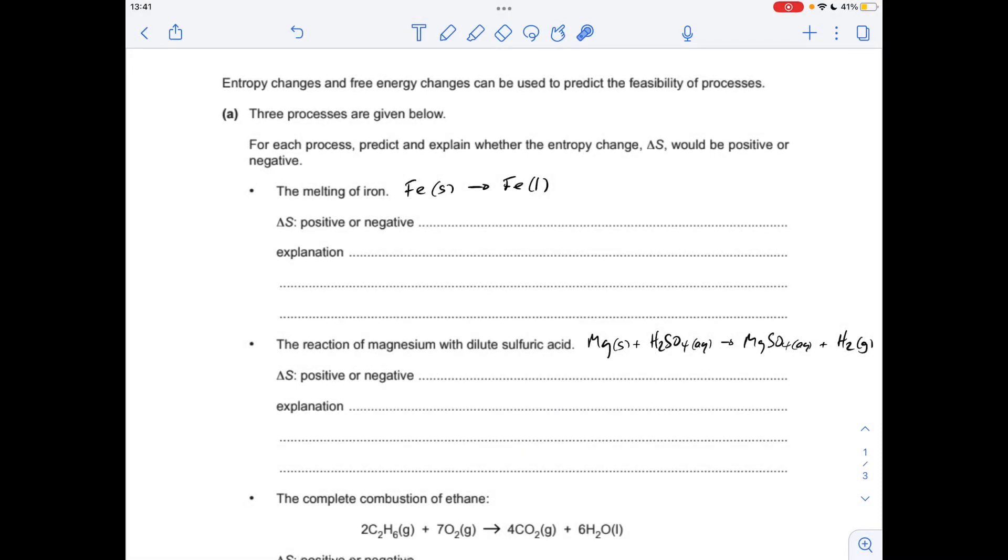Okay, so for the first part we've got three processes and we've got to say whether the entropy change is positive or negative and explain our answer. They gave us the equation for the third one, but I think it's much more helpful if you have an equation to work from for the other two. So for the melting of iron, that's iron solid to iron liquid. There's more disorder in the liquid than the solid and so the entropy change is positive.